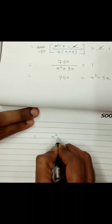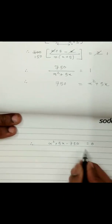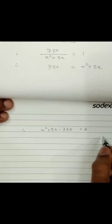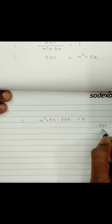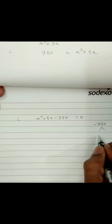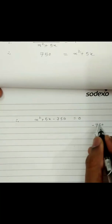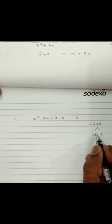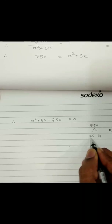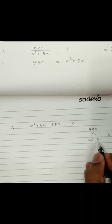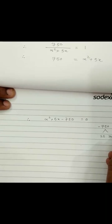Now we need to factorize x squared plus 5x minus 750 equals 0. We need two factors of negative 750 whose sum is positive 5. Using the technique: 25 times 30 is 750, and 30 minus 25 equals positive 5. So the factors are positive 30 and negative 25, matching the product of negative 750 and sum of positive 5.